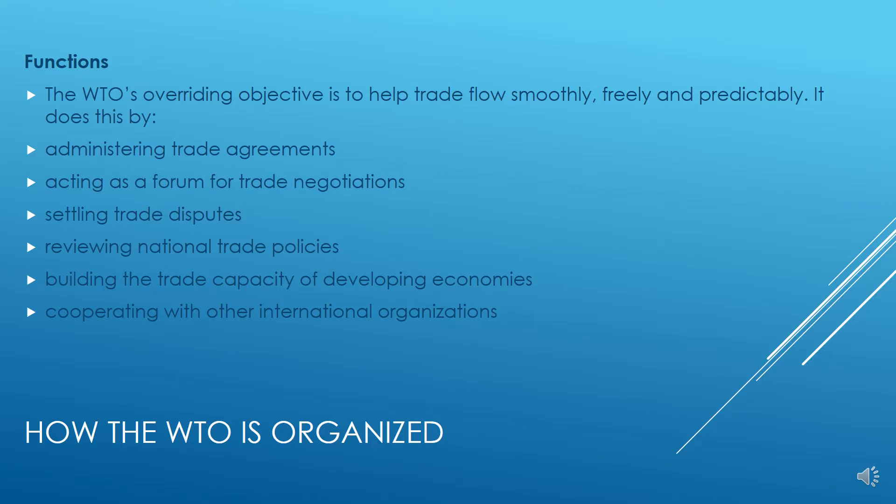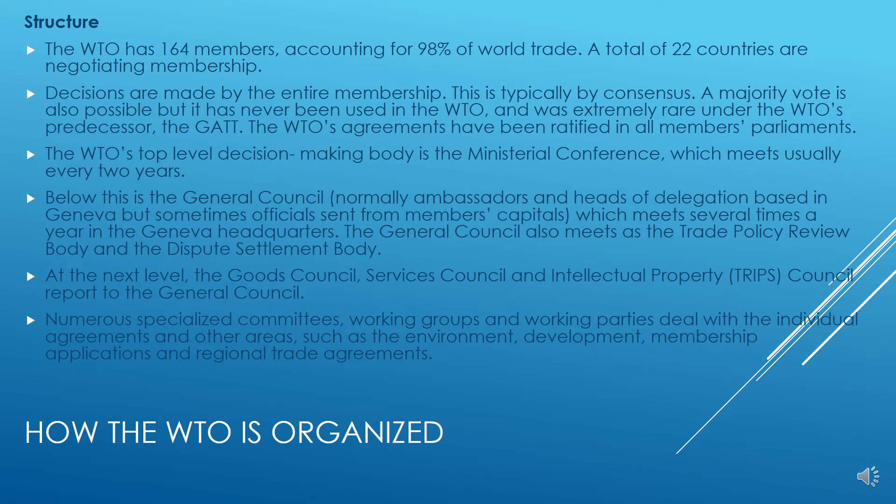The WTO's overriding objective is to help trade flow smoothly, freely, and predictably. It achieves this by administering trade agreements, acting as a forum for trade negotiations, settling trade disputes, reviewing national trade policies, building the trade capacity of developing economies, and cooperating with other international organizations.